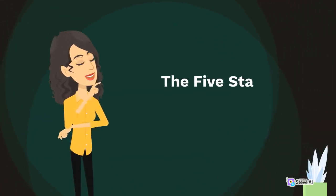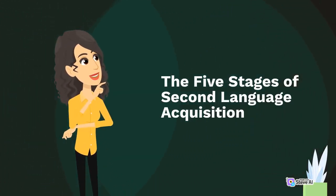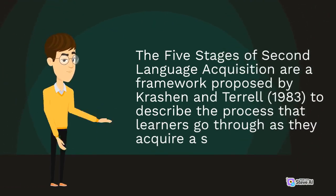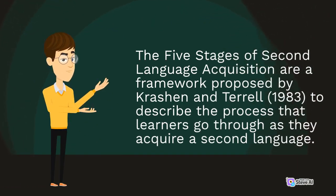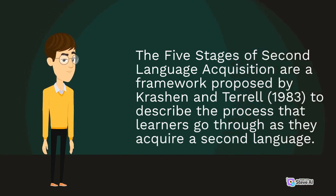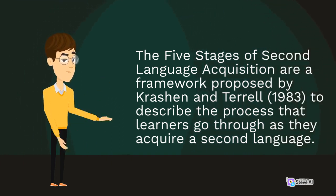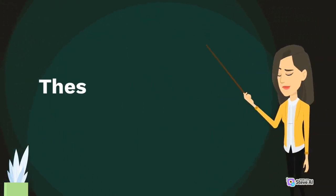The 5 Stages of Second Language Acquisition are a framework proposed by Krashen and Terrell, 1983, to describe the process that learners go through as they acquire a second language. These stages are: